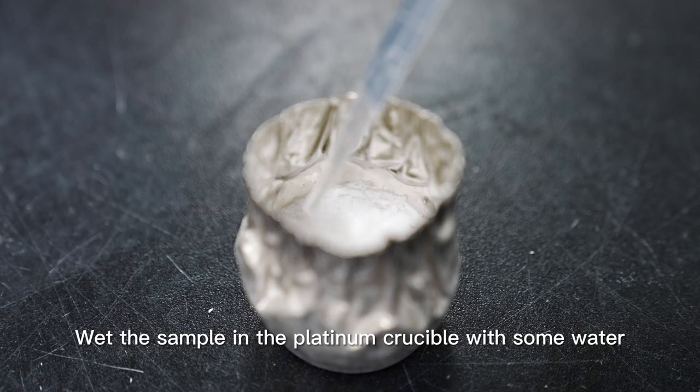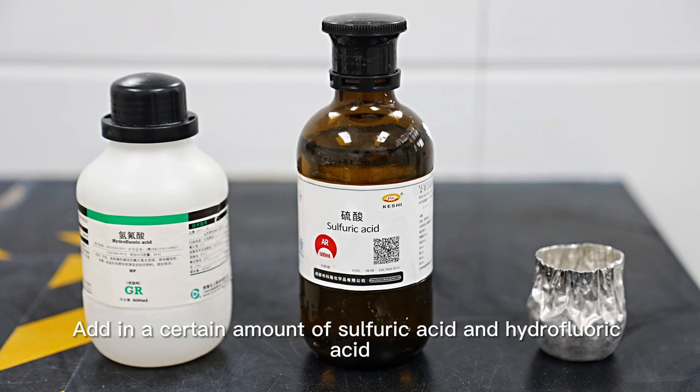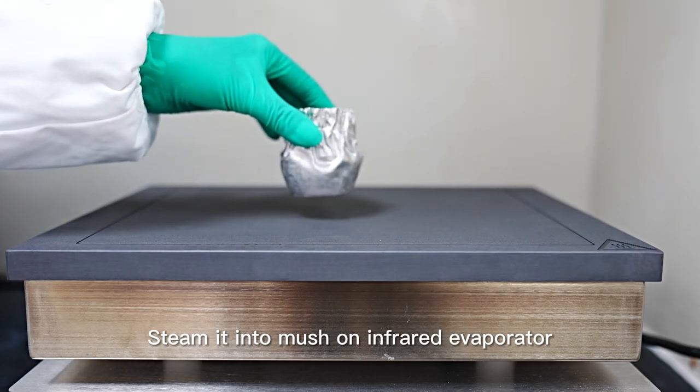Wet the sample in the platinum crucible with some water. Add in a certain amount of sulfuric acid and hydrofluoric acid. Steam it into mush on infrared evaporator.